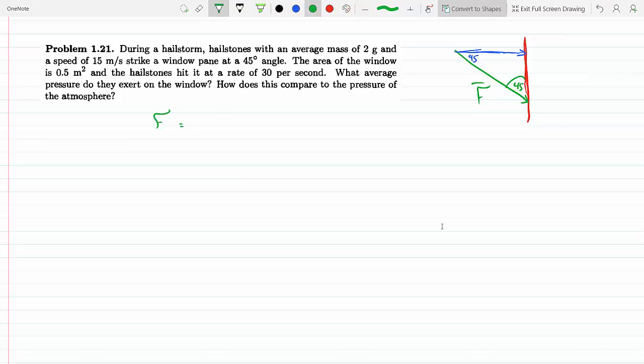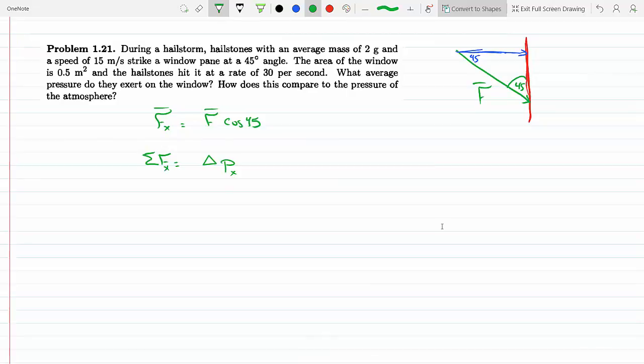This is the X component of the force. Now we know that Newton's second law could be interpreted as the sum of forces is equal to the change in momentum. The change in momentum, if I'm talking about the X direction, then I could just call these X, and if I'm talking about the average, these here would be averages.